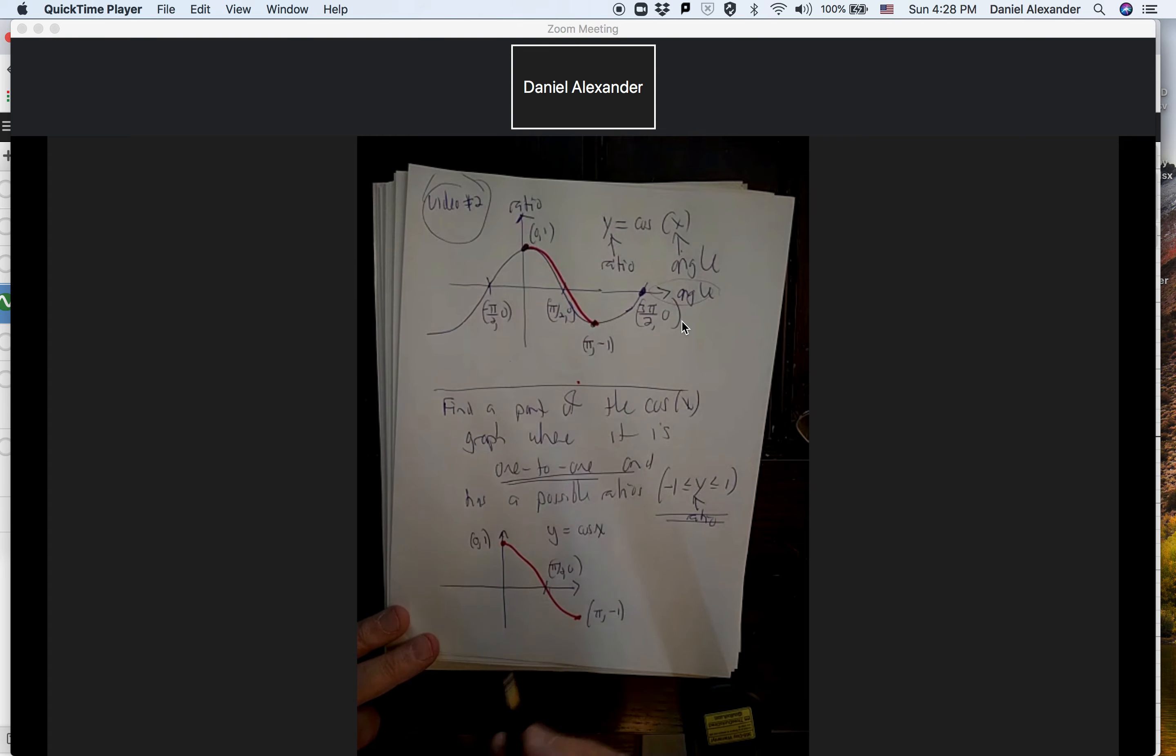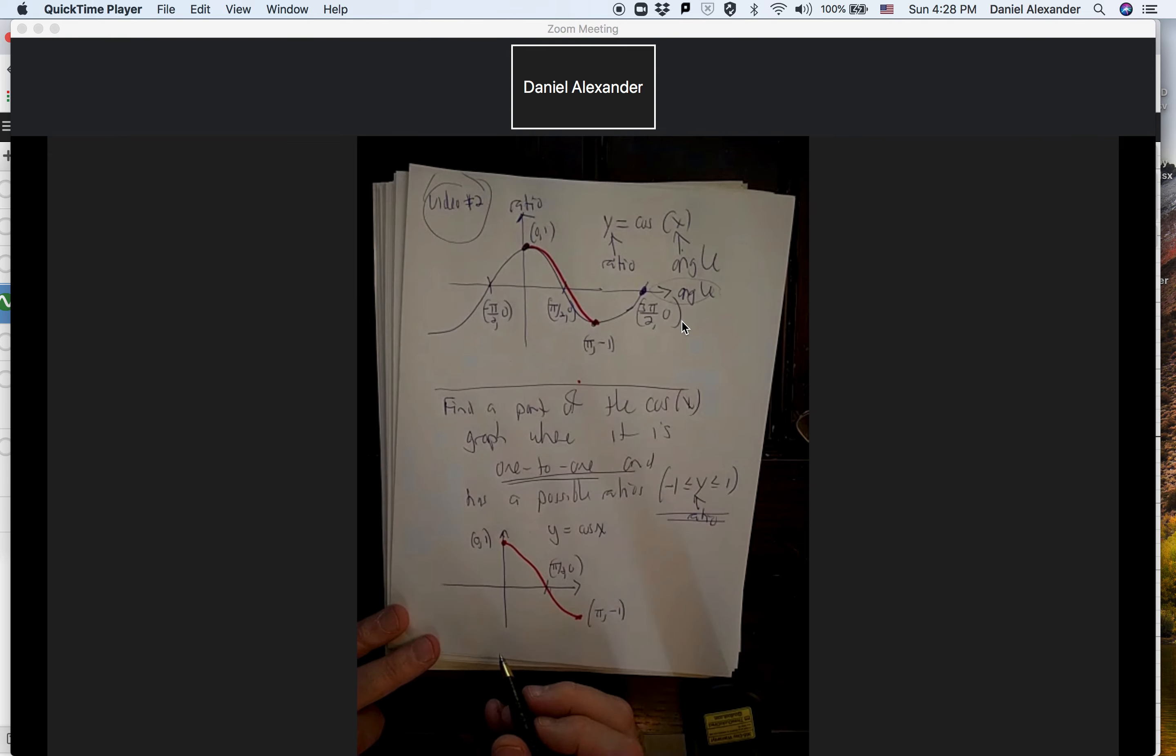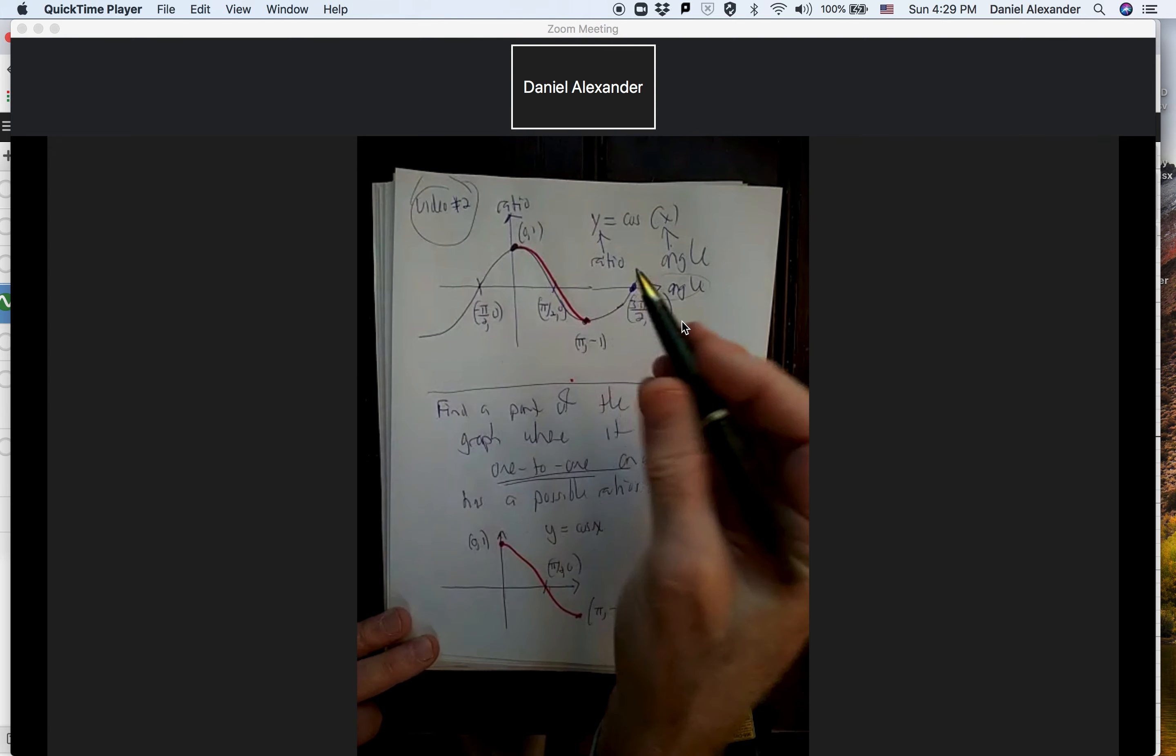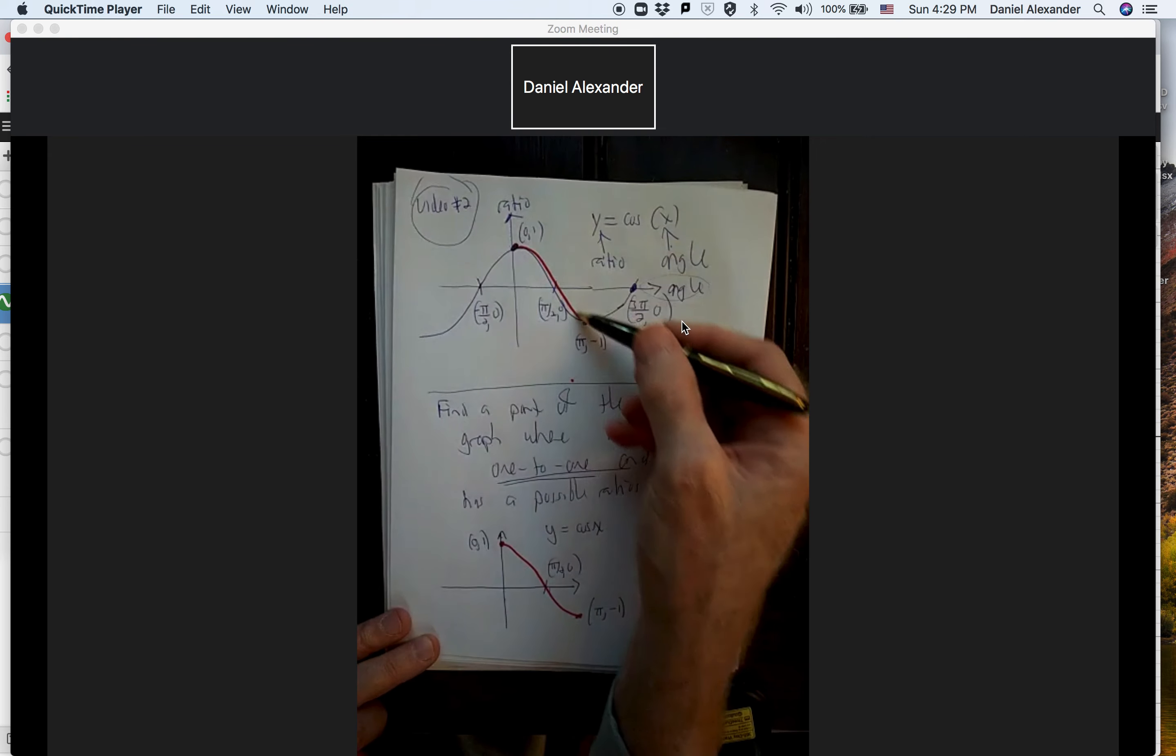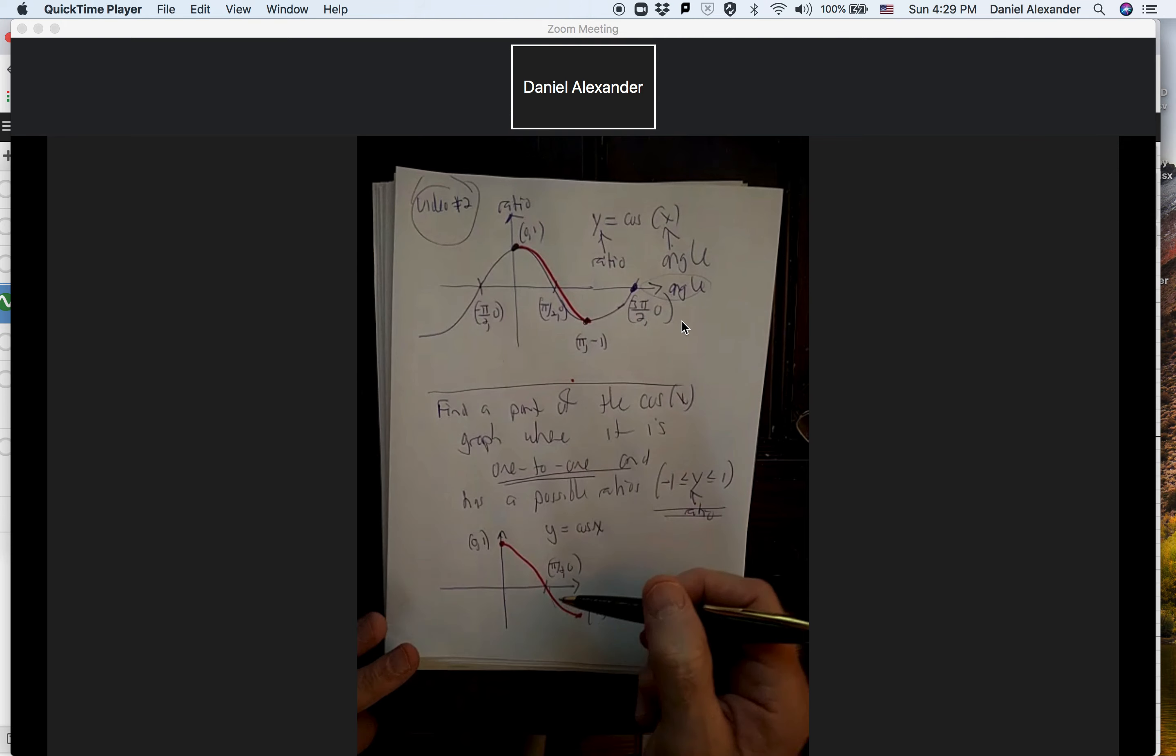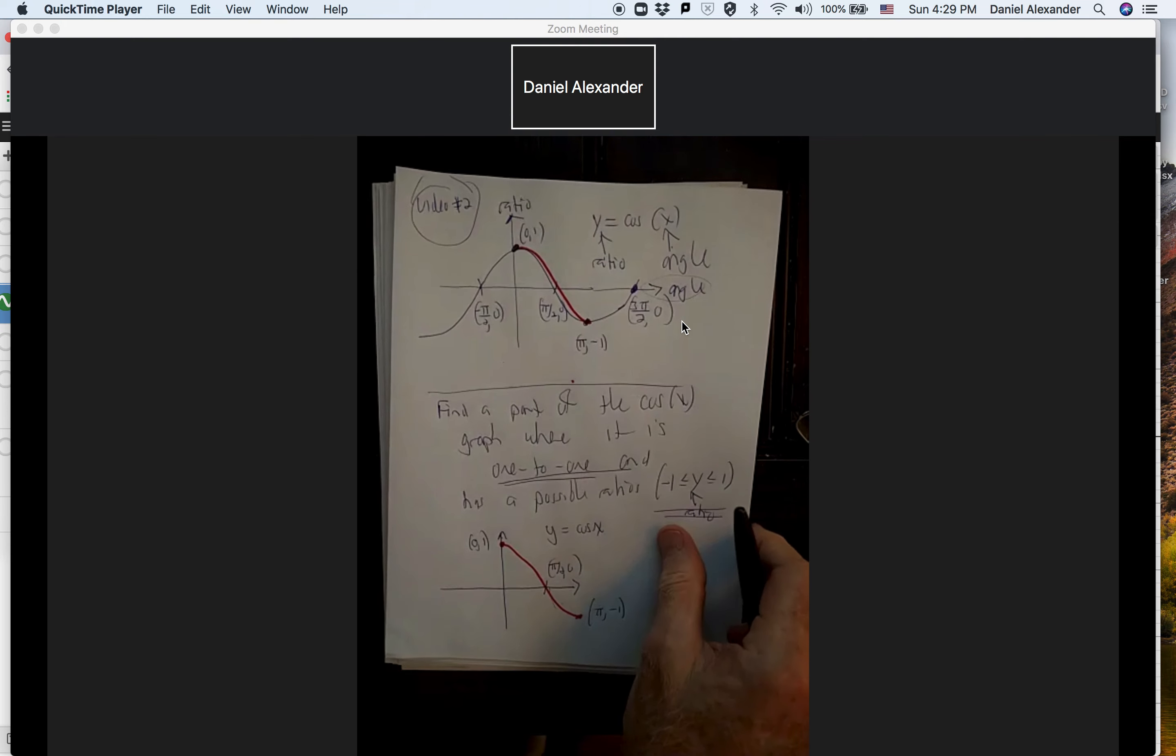So we're going to use this to develop the inverse. So we're just going to switch everything around. So I'll try to work that out real quickly. In order to find the inverse, we have to restrict the cosine to a part that's one-to-one that has all possible ratios. And then we use that to get the graph.